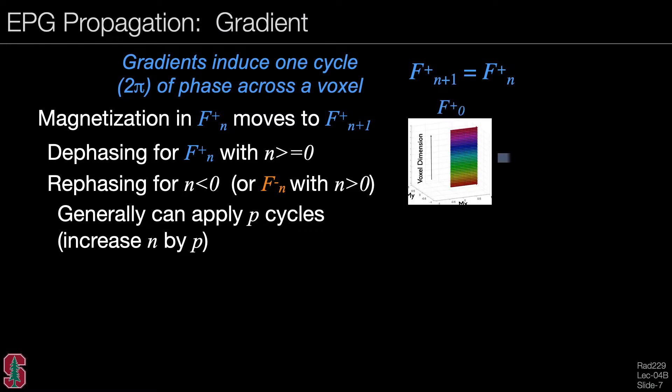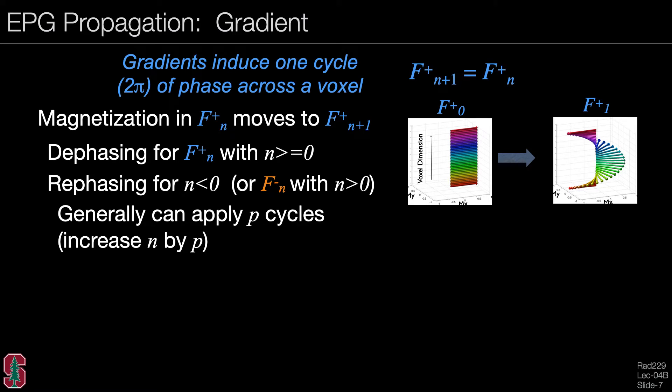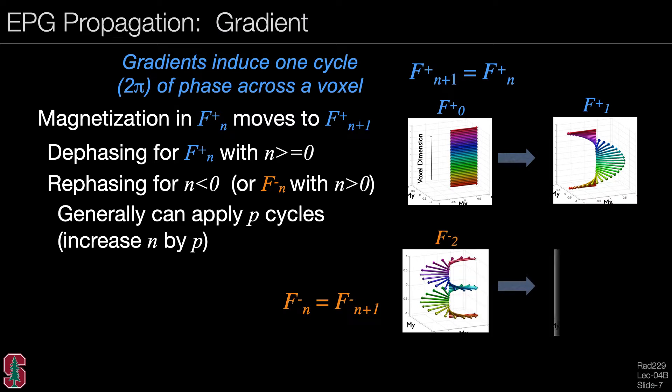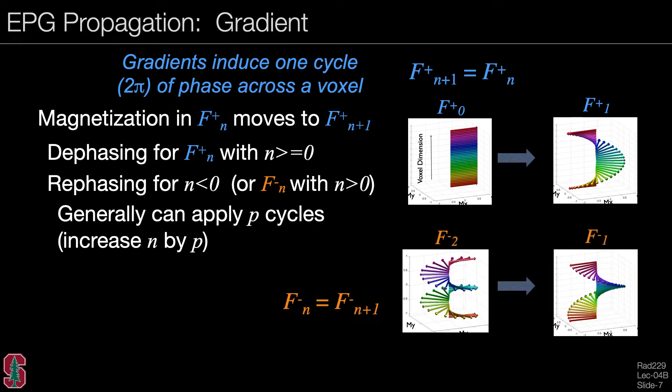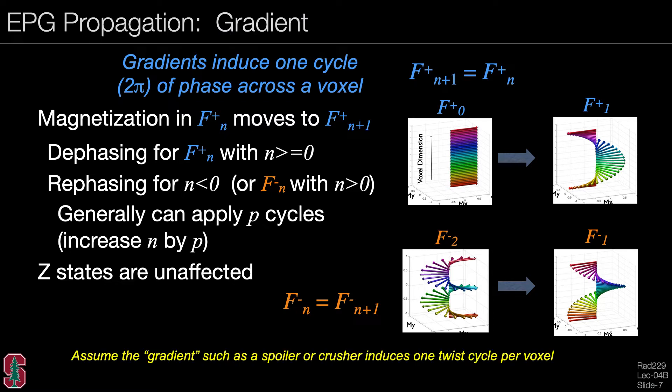So let's look at how this works. If we start in F plus sub 0, we will simply set F plus sub 1 equal to that coefficient. And this is equivalent to applying a gradient twist. For the F minus states, we will actually decrease the order because we are rephasing with a unit gradient. The Z states are unaffected by a gradient. And again, we're assuming a unit gradient, which induces one twist cycle per voxel. And I should add the comment that you can have a negative unit gradient, which would do the opposite.